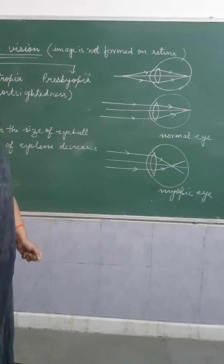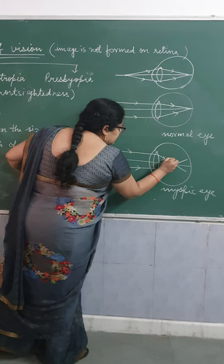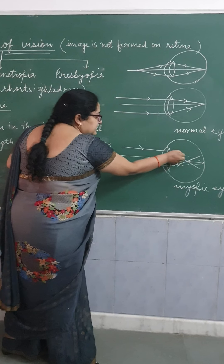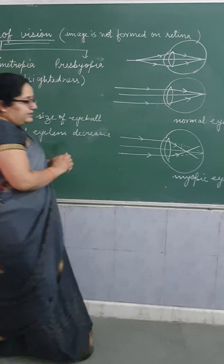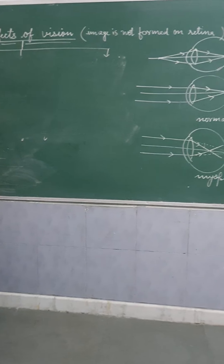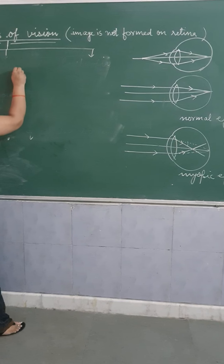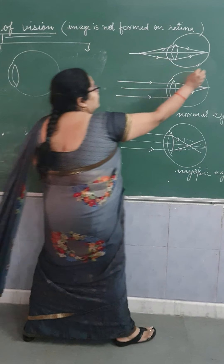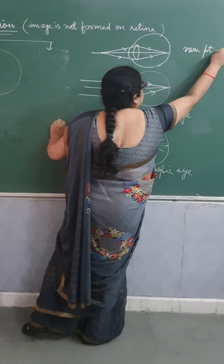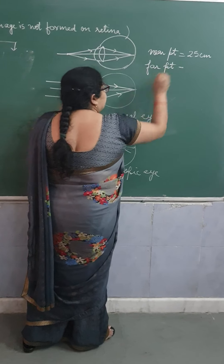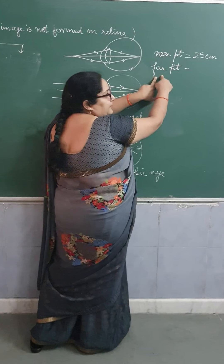If we want to do the correction, we have to diverge these rays so that the image will be formed at the retina. So here we have to use a diverging lens. One important thing to remember: in myopia, the person is able to see near objects, so there is no effect on the near point. For a myopic person, the near point is still 25 centimeters, but the far point will change. For a normal person the far point is infinity, but for a myopic person it is not infinite.